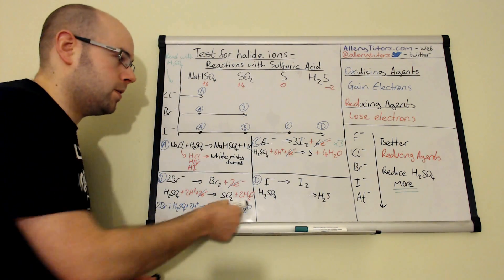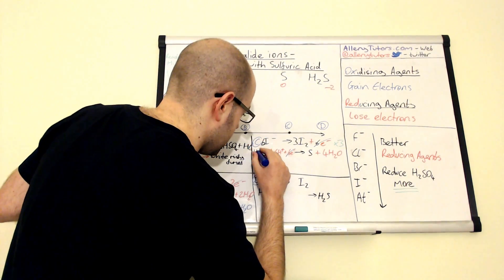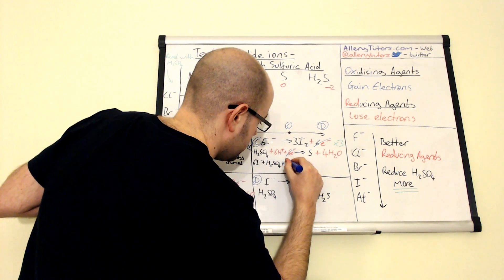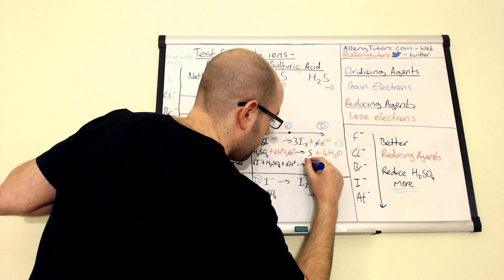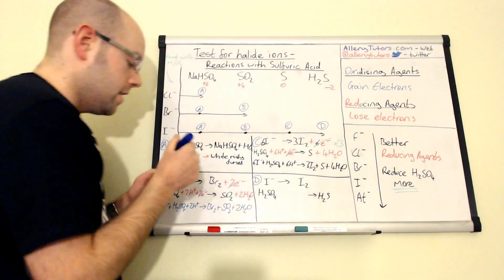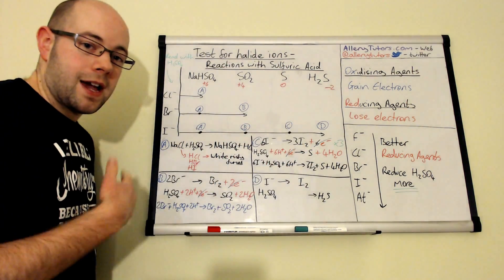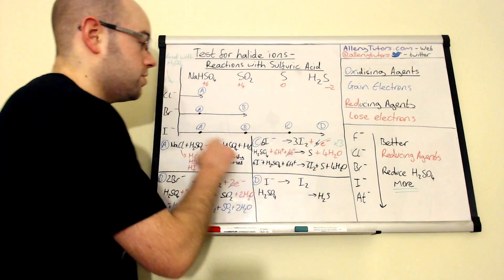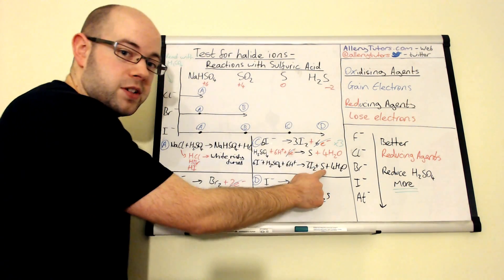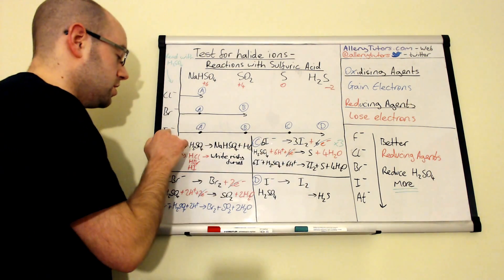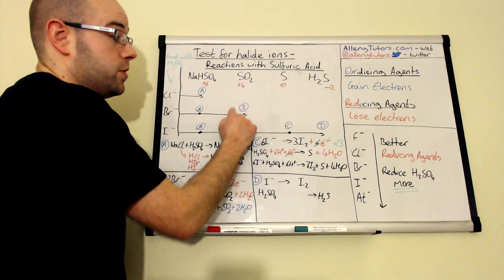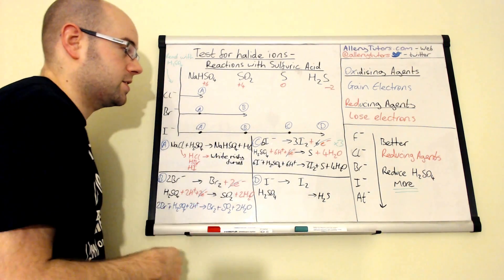Combining to form the full ionic equation for reaction C: 6I⁻ + H₂SO₄ + 6H⁺ → 3I₂ + S + 4H₂O. Sulfur is a yellow solid, so if you see a yellow solid forming you know your halide ion must be iodide — none of the others are powerful enough as reducing agents to produce the yellow solid of sulfur. That is a classic sign you have an iodide ion.